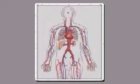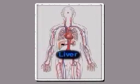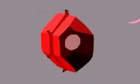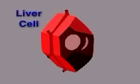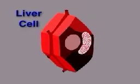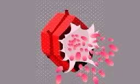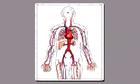In people, plasmodia first travel rapidly through the bloodstream to the liver. They invade liver cells and again divide. The liver cells eventually burst, releasing thousands of plasmodia back into the bloodstream.